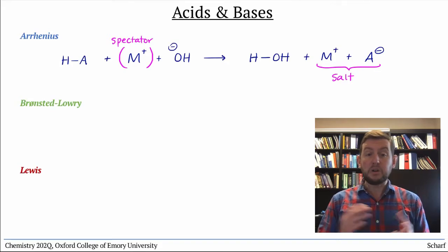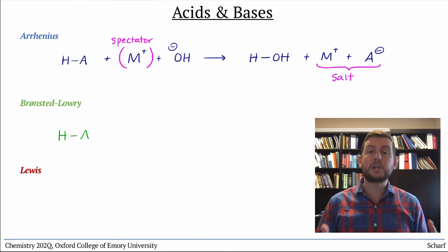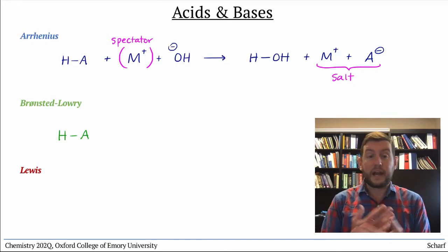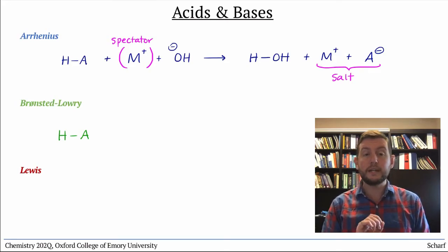Bronsted-Lowry acids are no different from Arrhenius acids, so we can abbreviate them the same way, HA. But Bronsted-Lowry bases don't have to be hydroxide, though of course OH- is an example of a Bronsted base.